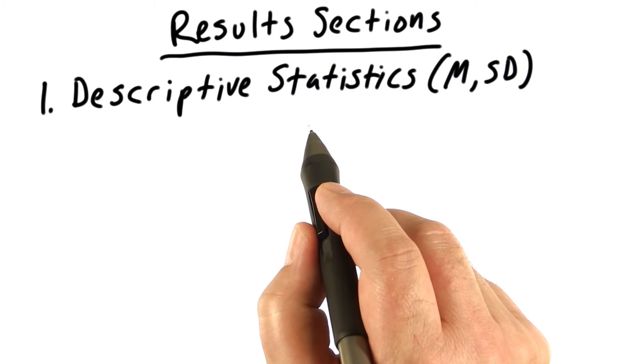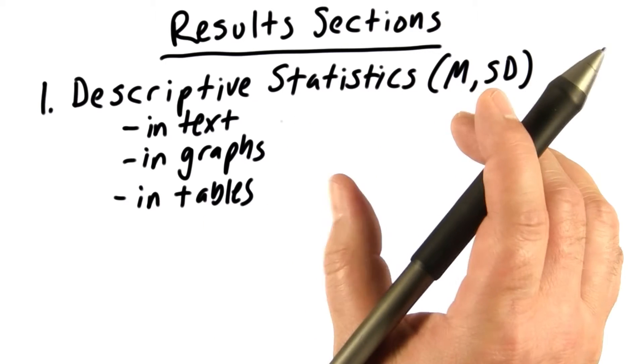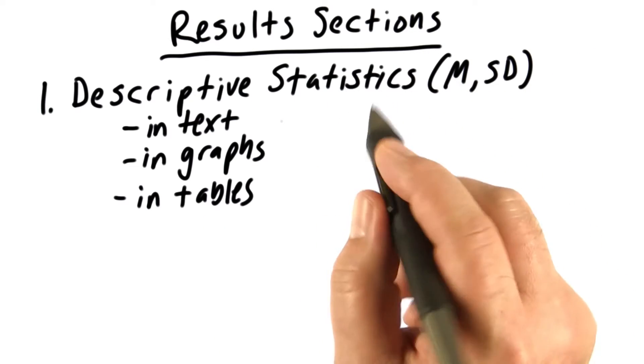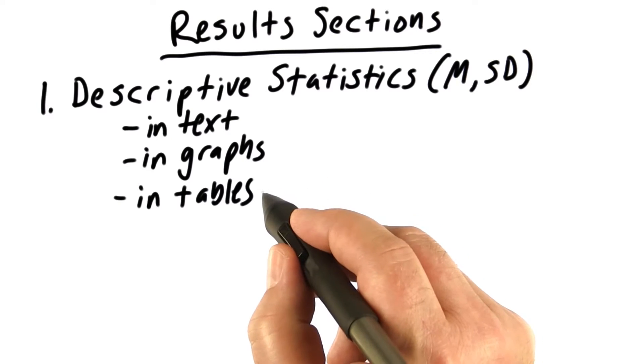And we can report those in three ways. We can report them in text, in other words, we put them right in between our words in our results section. We can put them in graphs, such as a bar graph, or we can put them in tables.